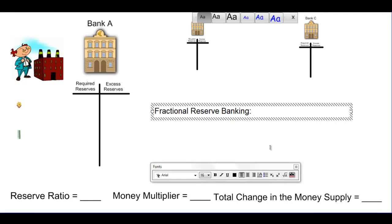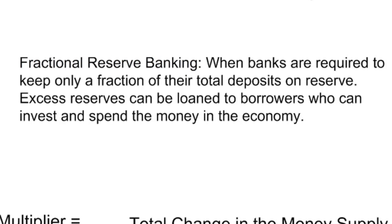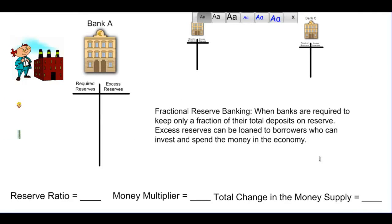Today's video lecture is going to explain how money is created in a fractional reserve banking system. A fractional reserve banking system is when banks are required to keep only a fraction of their total deposits on reserve. Any excess reserves — deposits that exceed what is required — can be loaned out to borrowers who can invest and spend the money in the economy. In such a system, a particular amount of money can be multiplied through the creation of new money as it is loaned to borrowers and spent on goods, services, or new investments in capital.